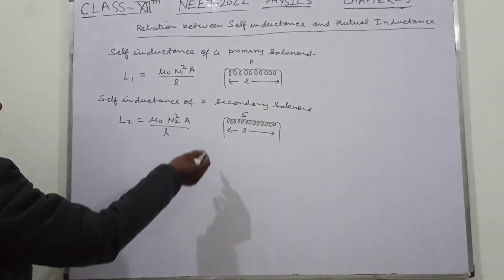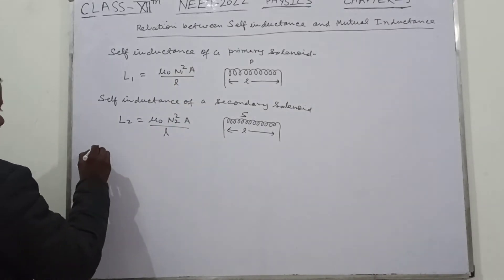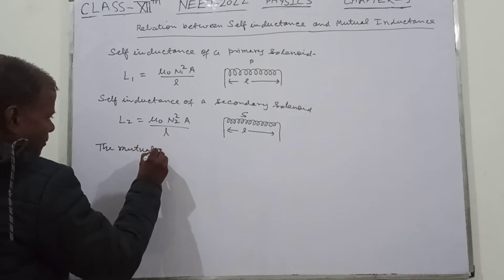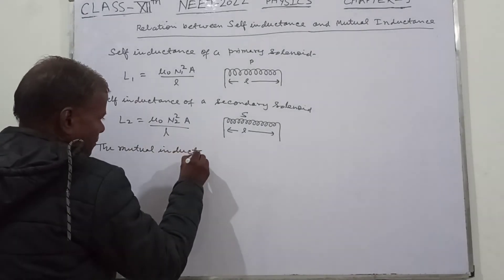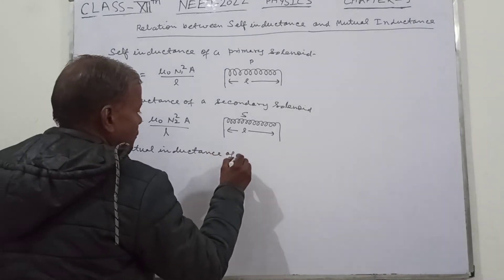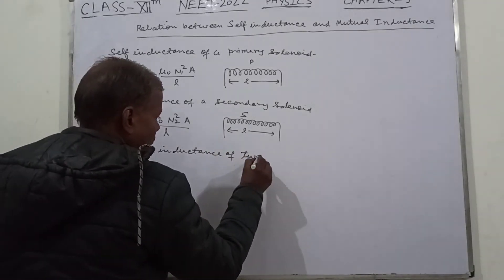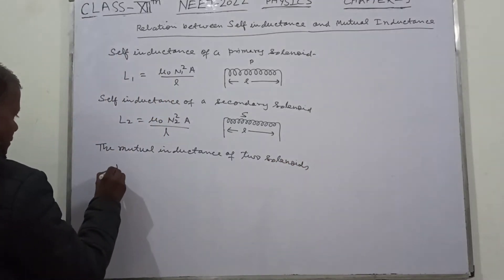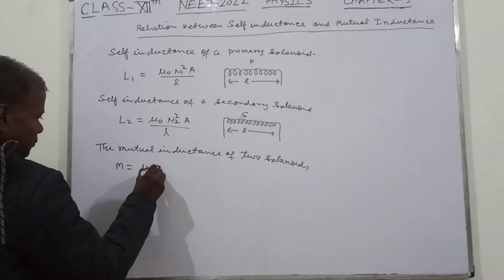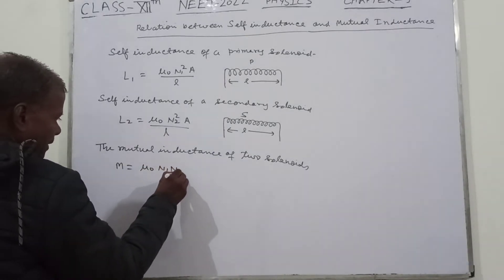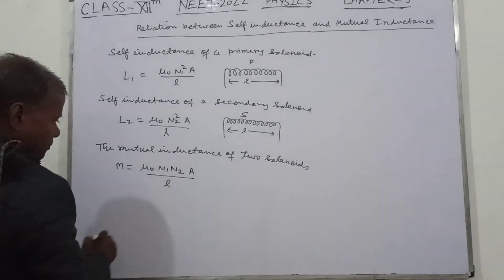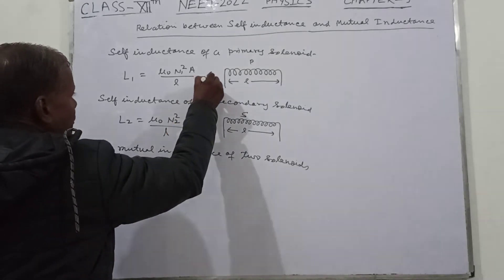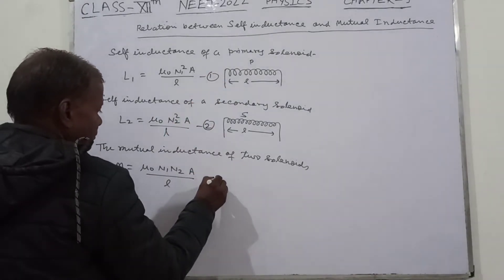And now this is the mutual inductance of the two solenoids. The mutual inductance M is equal to mu naught n1 n2 a upon l. So this is equation number 1, this is equation number 2, and this is equation number 3.